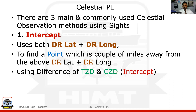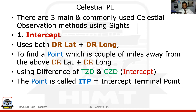Using the DR latitude and longitude, I find a point which is actually a couple of miles away, because dead reckoning itself is a kind of estimation. This point is found from two values of your Celestial PL: one is called True Zenith Distance and another is called Calculated Zenith Distance. The difference between TZD and CZD is what is called the intercept. Using this intercept, I find a point called the Intercept Terminal Point, or ITP.